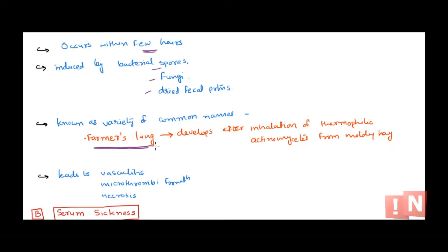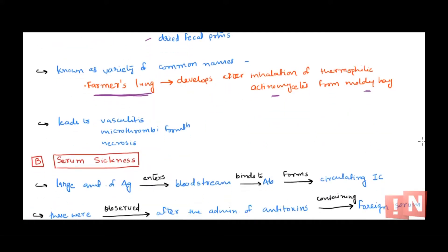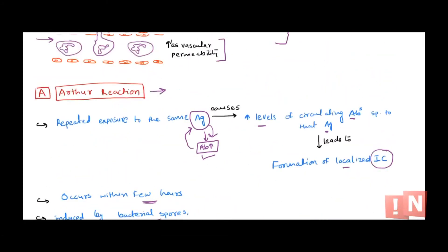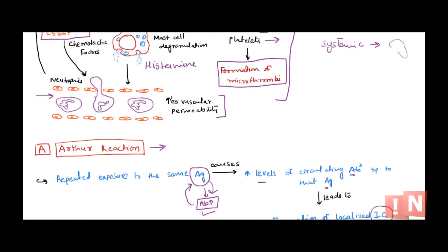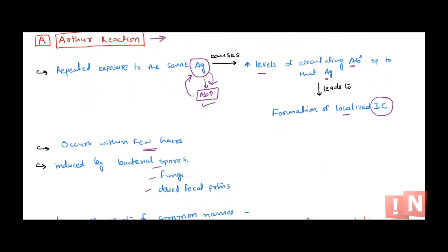A classic example is farmer's lung, a condition that develops after repeated inhalation of thermophilic actinomycetes from moldy hay. Once the individual has high levels of antibodies against these antigens, re-inhalation triggers type 3 hypersensitivity, resulting in vasculitis, microthrombus formation, and necrosis. Farmer's lung is thus an example of a localized Arthus-type reaction.